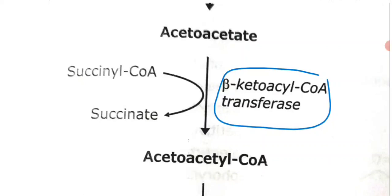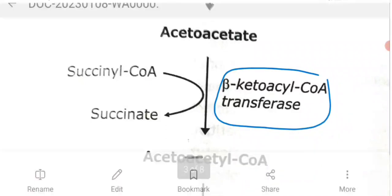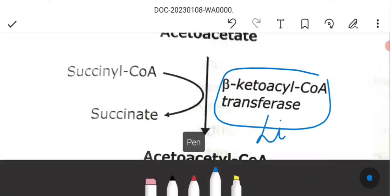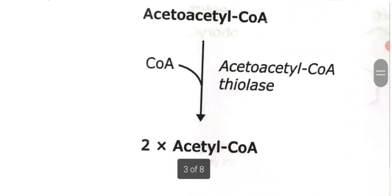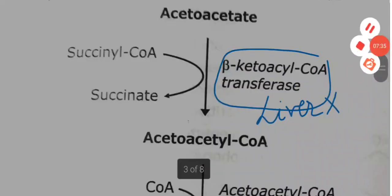Importantly, the enzyme beta-ketoacyl-CoA transferase is absent in the liver. Therefore, the liver cannot utilize ketone bodies — because the required enzyme is absent. Acetoacetyl-CoA is then converted by thiolase into two acetyl-CoA molecules. This completes the utilization pathway.